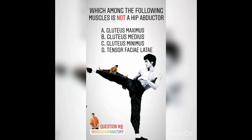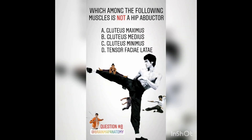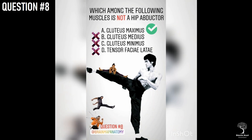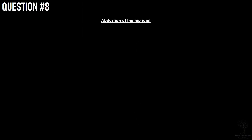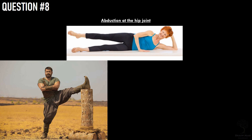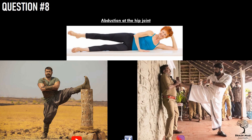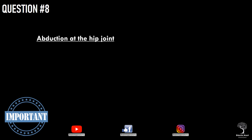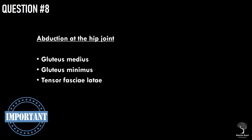Question 8. Which among the muscles is not a hip abductor? The right answer is option A, gluteus maximus. Abduction at the hip joint is brought about by gluteus medius, gluteus minimus, and tensor fasciae latae. Gluteus medius and minimus also help in the internal rotation of the hip joint. The action of gluteus maximus is extension of the hip joint. Take home message: gluteus medius, gluteus minimus, and tensor fasciae latae are the three muscles which abduct the hip joint.